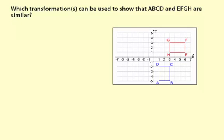Which transformations can be used to show that ABCD and EFGH are similar?